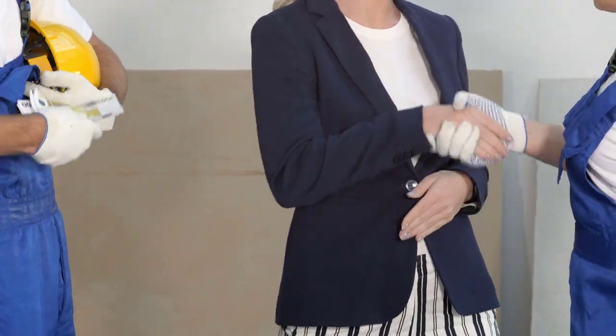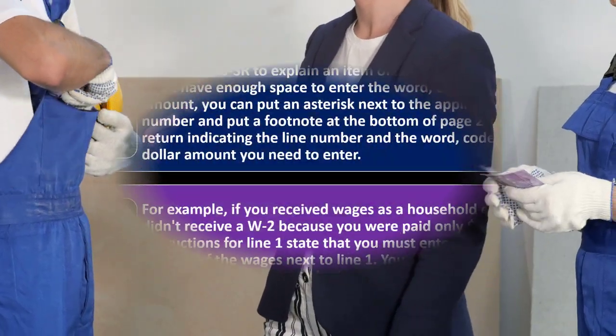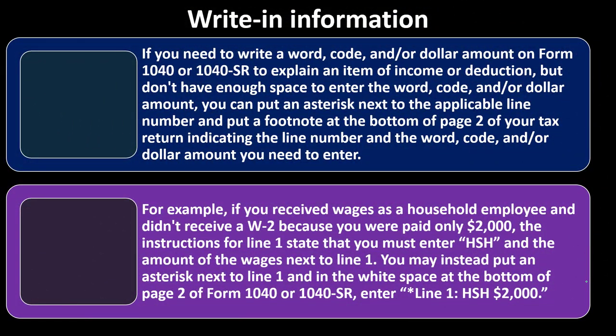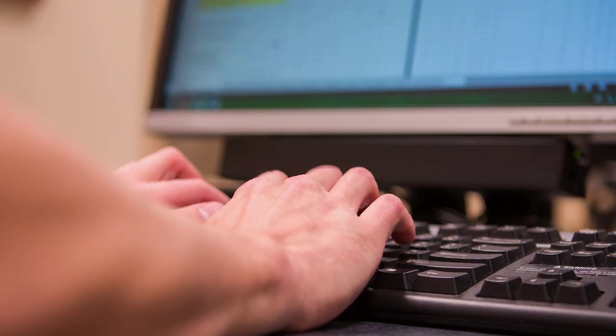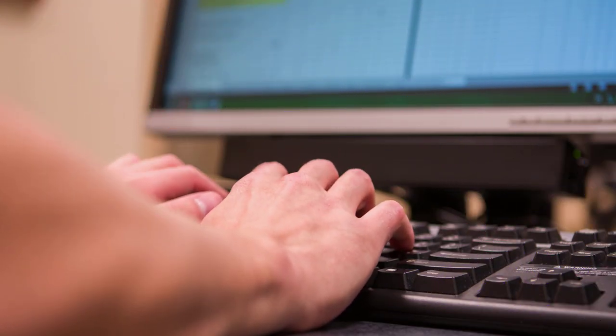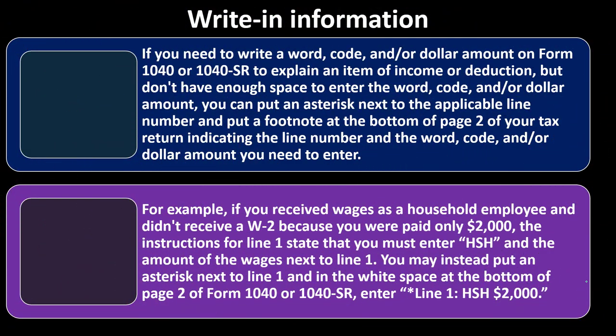You may instead put an asterisk next to line 1, and in the white space at the bottom of page 2 of Form 1040 or 1040-SR, enter the asterisk to indicate it there, line 1, HSH, and the $2,000 amount.